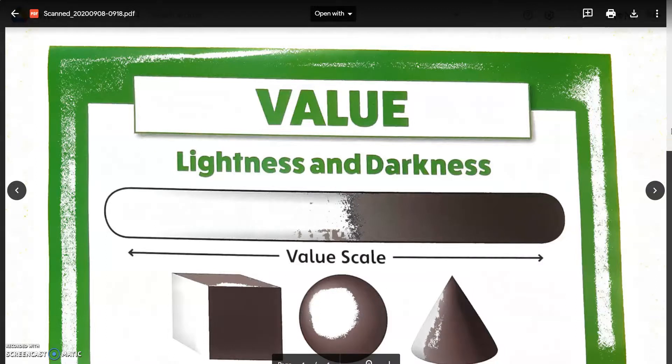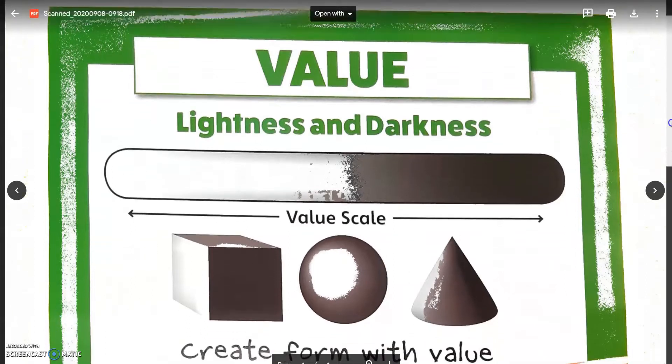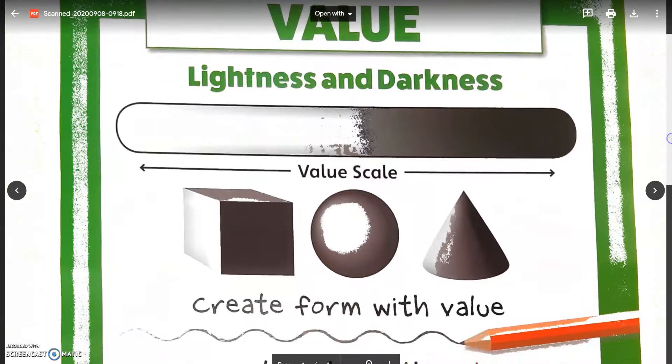Value is an element of art. Value refers to the lightness or darkness. What you see on your screen is a value scale. On one end it is very light and on the other end is very dark. And in between there are all different values going from light to dark and dark to light.